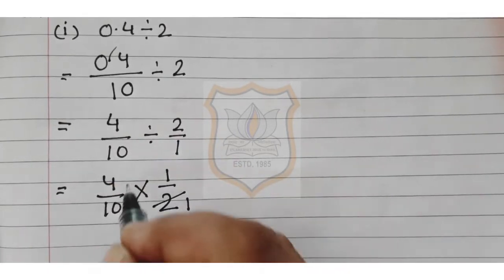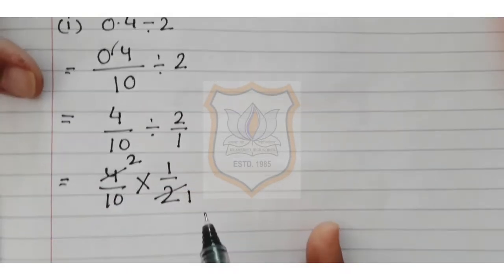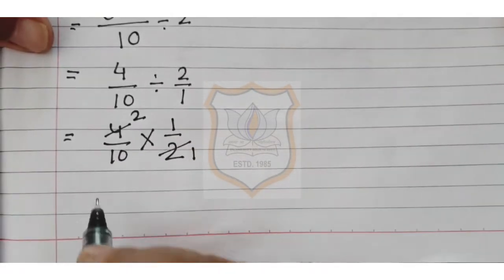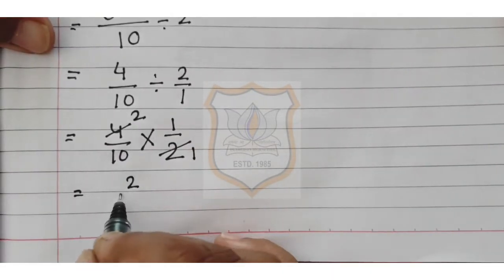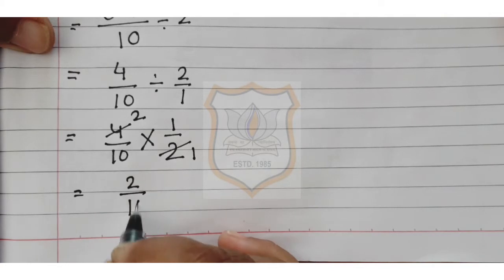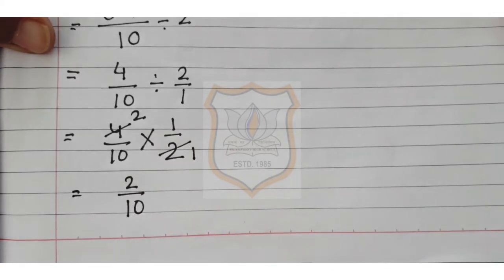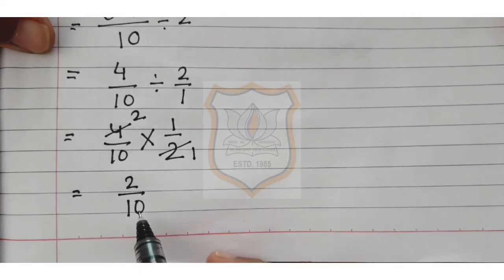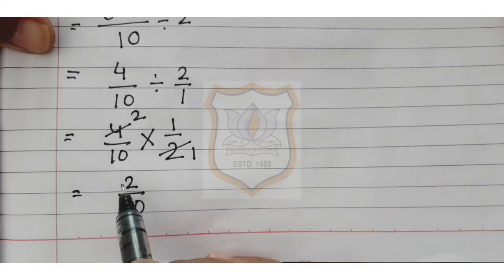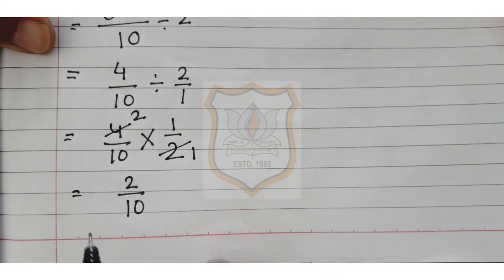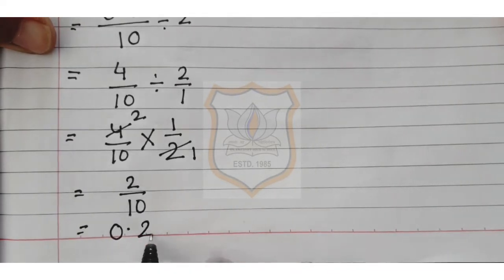So we get 4 upon 10 multiplied by 1 upon 2. Computing: 2 twos are 4, 2 ones are 2. That gives us 2 upon 10. Now the denominator has one zero, so the decimal moves one digit to the left. Our answer is 0.2.